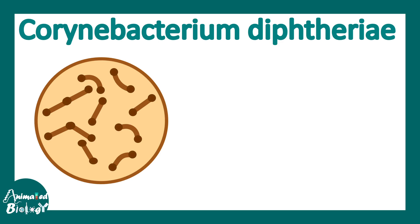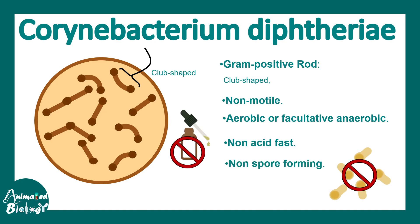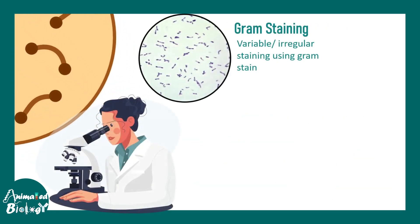In this video we'll talk about Corynebacterium diphtheriae. 'Coryne' means club-shaped — you can see these bacteria and they exactly look like a club. These are gram-positive rods, non-motile, aerobic or facultatively anaerobic, non-acid-fast, non-spore-forming, and they have an orientation like a V or L shape. Gram staining can detect that characteristic V and L shape, which is gram-positive, and can give rise to a preliminary idea about this particular bacteria.